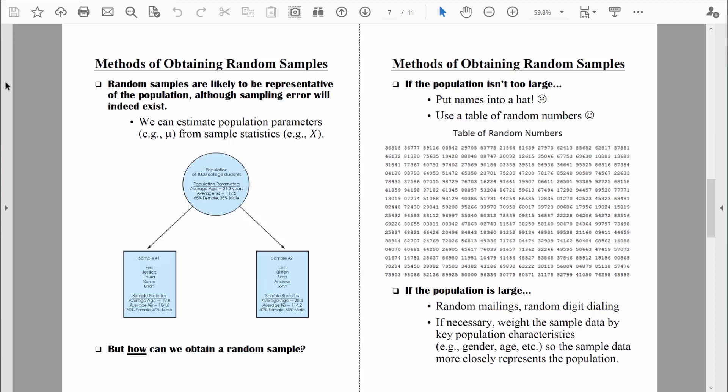It's much easier to measure a small sample, and if that sample represents the population, we can learn about the population from the sample. That said, we know that sampling error does indeed exist.